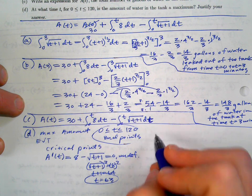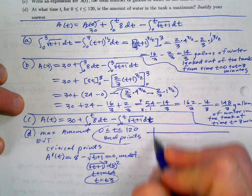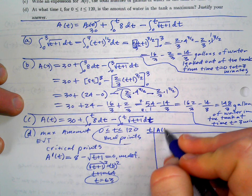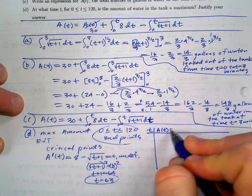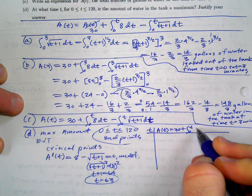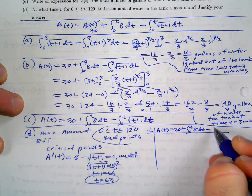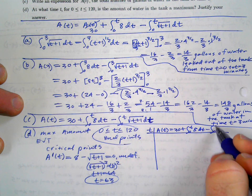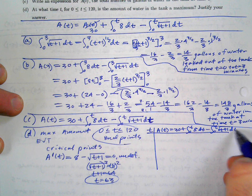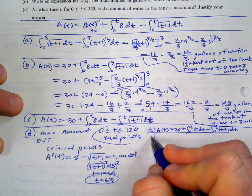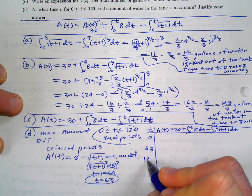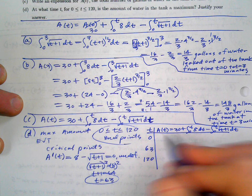Now we make a table: check time t = 0, t = 63, and t = 120 by plugging them into the rate model A(t) = 30 + integral from 0 to t of 8 dt − integral from 0 to t of √(t+1) dt. Plugging in t=0 gives A(0) = 30.